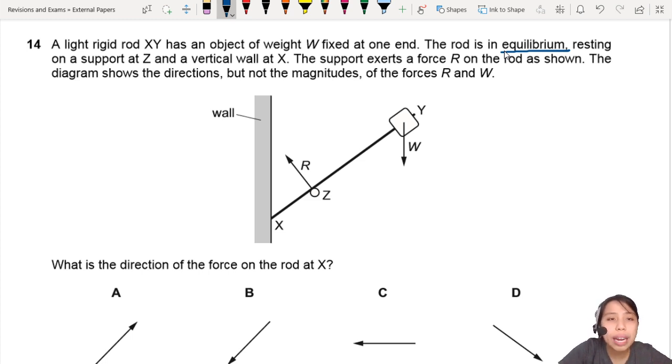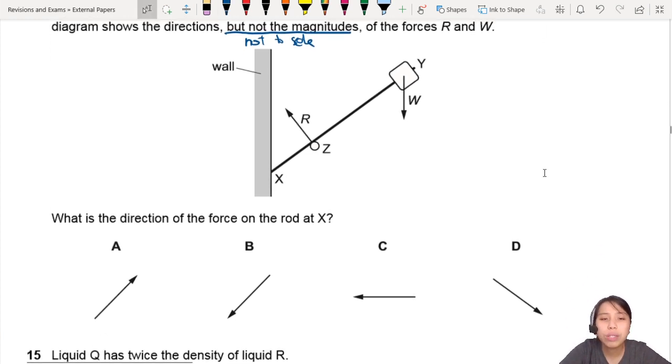The support exerts a force on the rod as shown. So the diagram shows the direction but not the magnitudes of the forces. So not the magnitudes means it's not to scale. So don't try to redraw the arrows into some kind of triangle because it's not to scale.